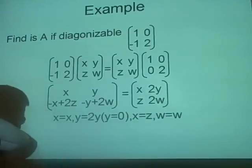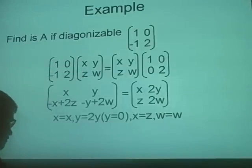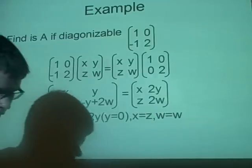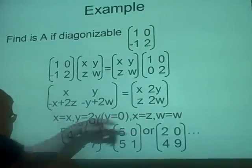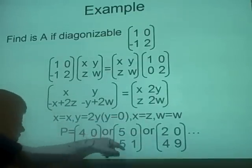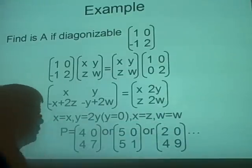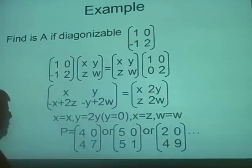With these constraints — y equals 0, x equals z, and w being free — we can form matrix P using any valid values satisfying these rules. For example, we can use entries like 9, 7, 1, etc. This confirms that A is indeed diagonalizable.